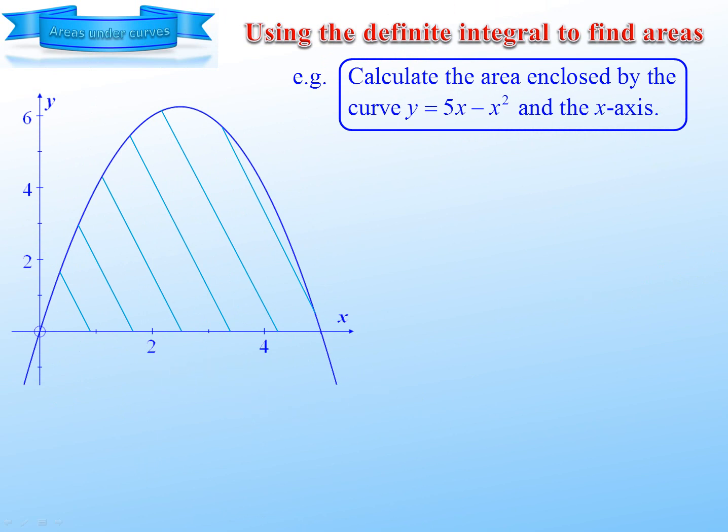In this first example, we have the curve y equals 5x minus x squared. And we're asked to find the area enclosed by that curve and the x-axis. In other words, to find the area under the curve from 0 to 5.